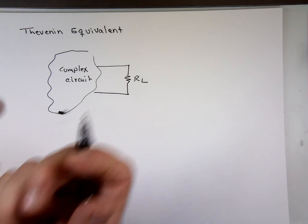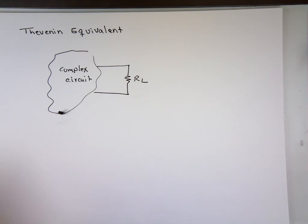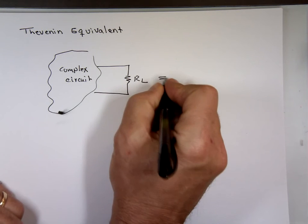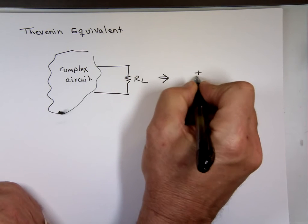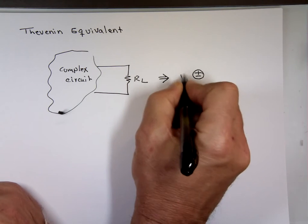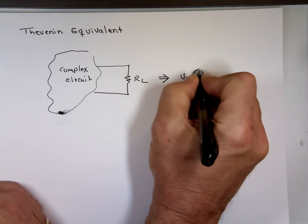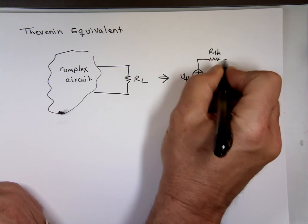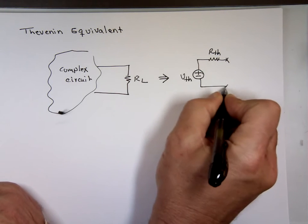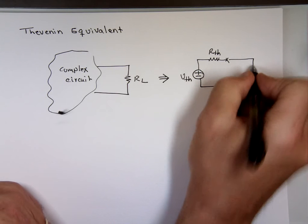Thevenin says we can take this entire circuit and replace it with what we call Thevenin equivalent circuit. What's the Thevenin equivalent circuit? We're going to replace it with a voltage source, we'll call it V-Thevenin, in series with a resistor called R-Thevenin. And this is your R sub L.